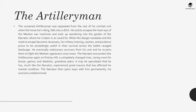The Artillery Man: The unnamed Artillery Man was separated from the rest of his combat unit when the horse he was riding fell into a ditch. He luckily escapes the heat rays of the Martian war machines and ends up wandering into the narrator's garden, where he is taken in and cared for. His military training, caution and prudence prove exceedingly useful in their survival across the battle-ravaged landscape. He eventually rediscovers survivors from his unit and rejoins them. The narrator encounters him again on Putney Hill — a completely changed man, caring more for booze, games and idealistic grandiose plans, likely due to great trauma affecting his mental condition. The narrator parts ways with him permanently, his outcome undetermined.